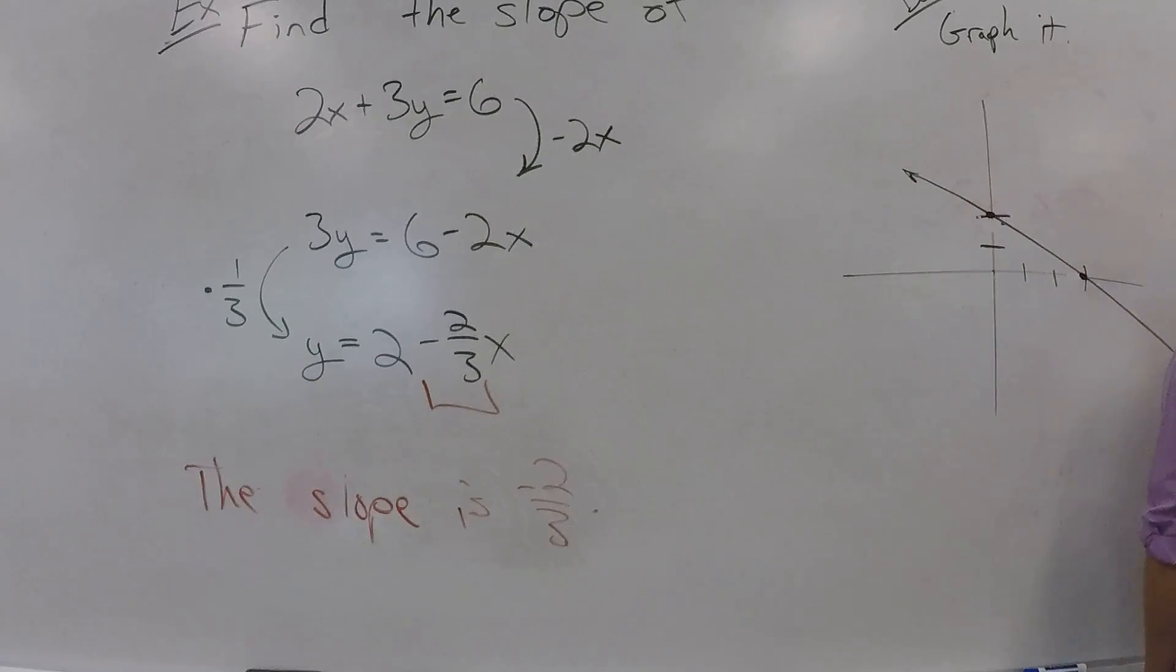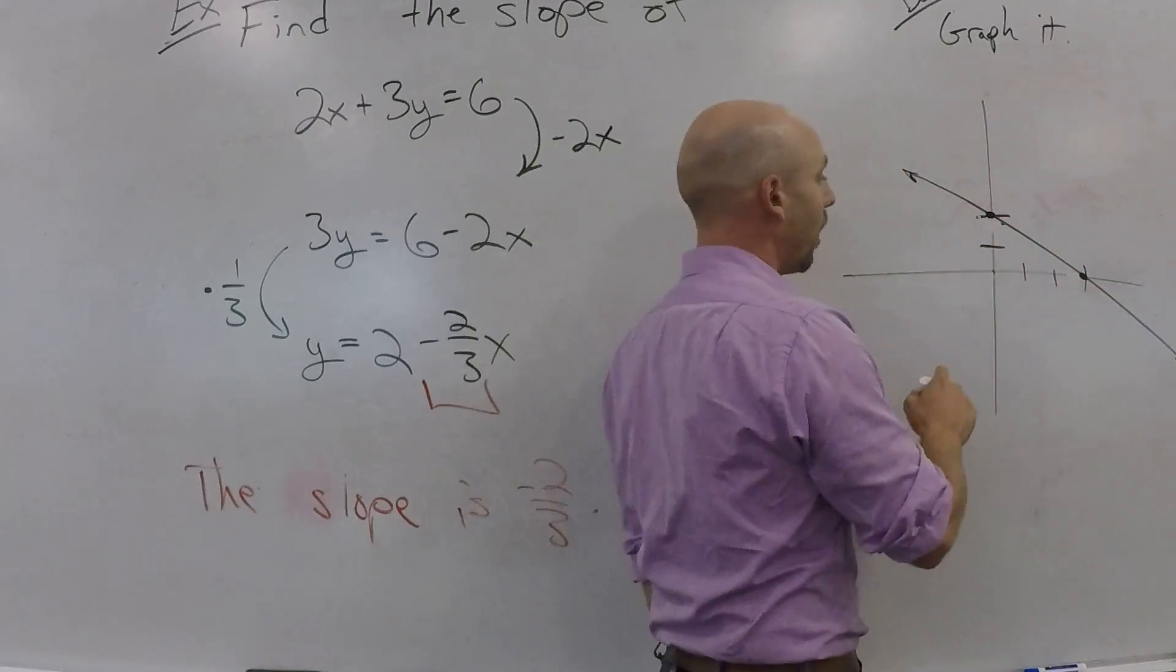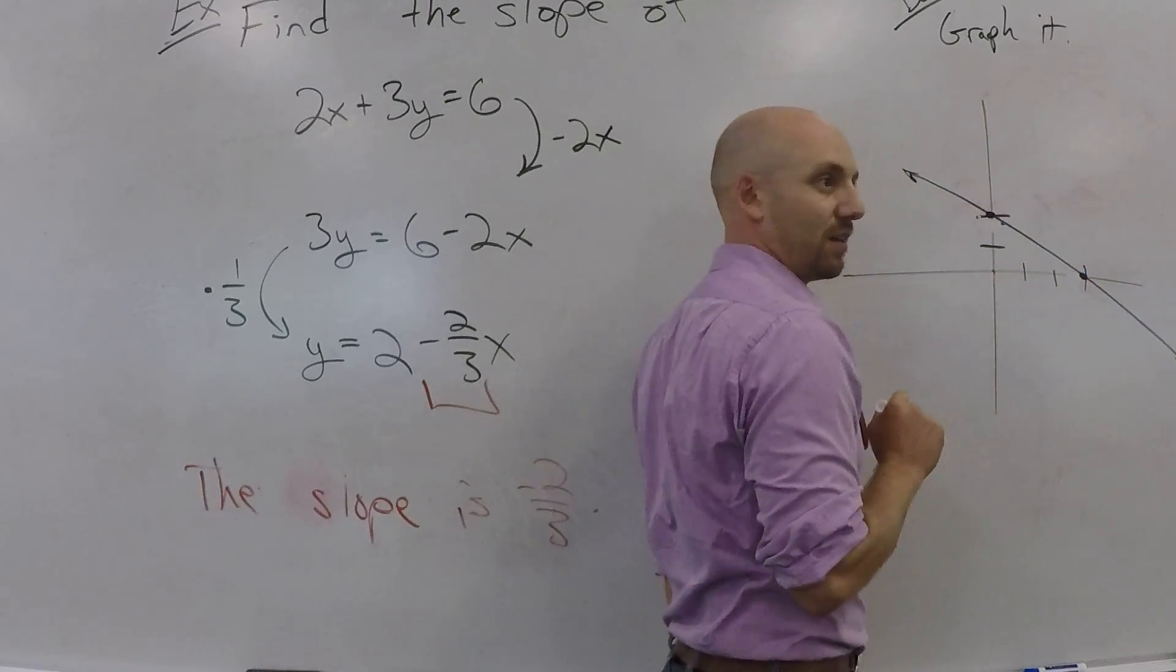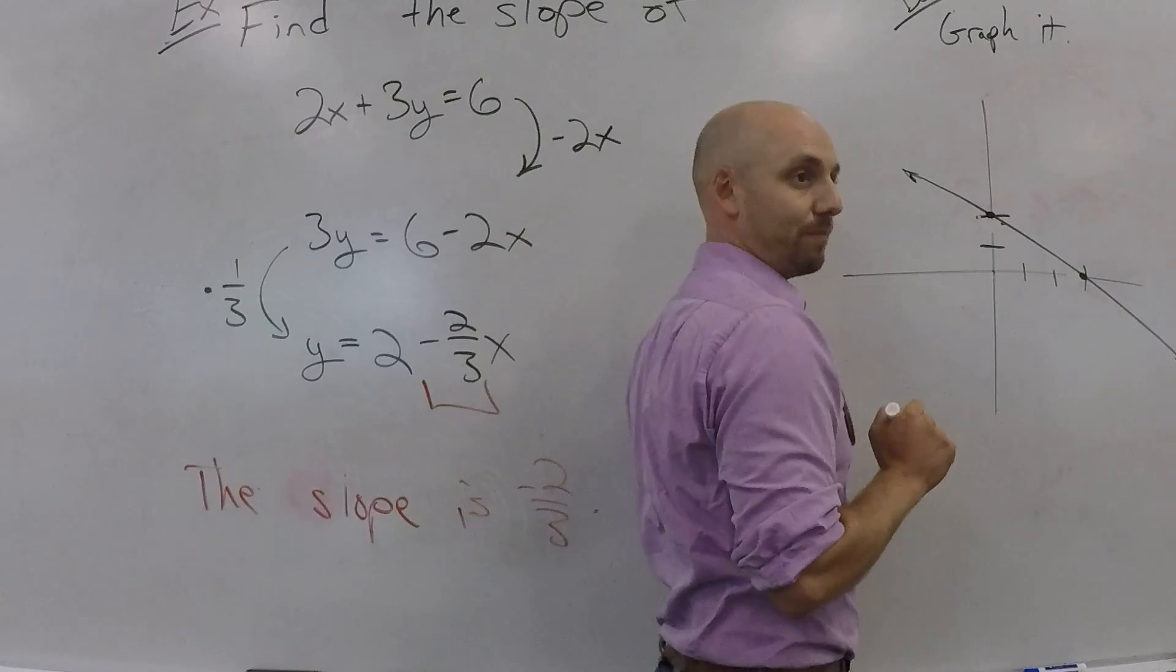If Y is 0, then what do you have? 2X equals 6. 2X is 6. So, X is 3. So, when you go up 0, you should go over 3. Does that work every time? Yep.